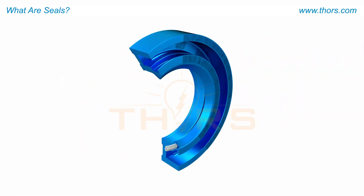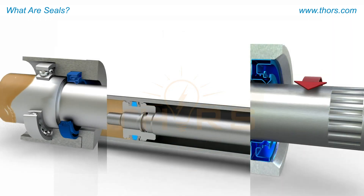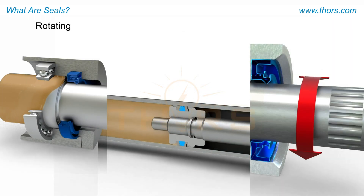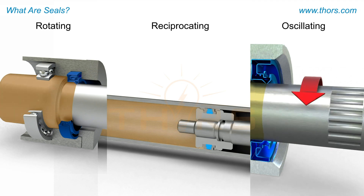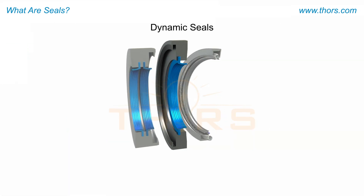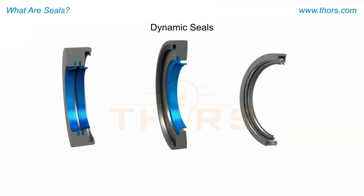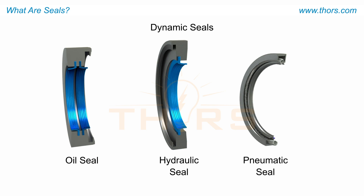Dynamic seals are used to seal contact surfaces that move relative to each other. The relative motion can be rotating, reciprocating, or oscillating. The most commonly used dynamic seals are oil seals, hydraulic seals, and pneumatic seals.